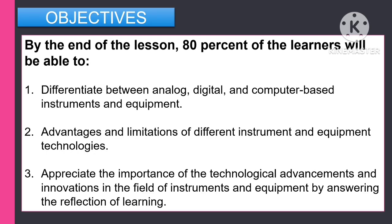For the objectives, by the end of the lesson, 80% of the learners will be able to: first, differentiate between analog, digital, and computer-based instruments and equipment; second, identify the advantages and limitations of different instrument and equipment technologies; and third, appreciate the importance of technological advancement and innovation in the field of instruments and equipment by answering the reflection of learning.